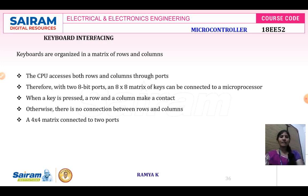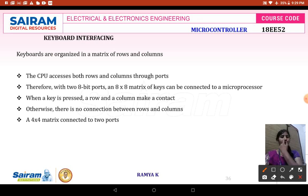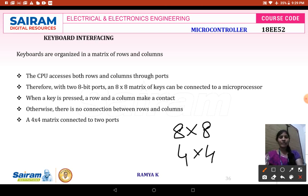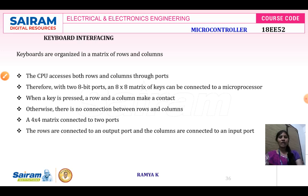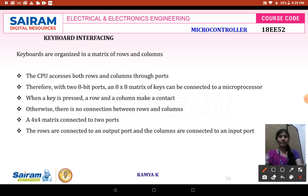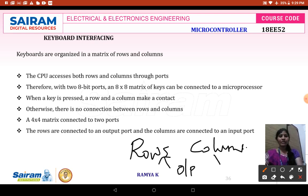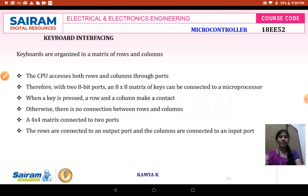For a 4 by 4 matrix connected to two ports, and 8 by 8 means two 8-bit ports will be connected. Two ports are required — one for the row and another for the column. The rows are connected to an output port and the columns are connected to an input port. So the output port is connected to rows and the input port is connected to columns.